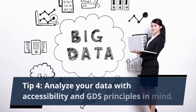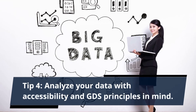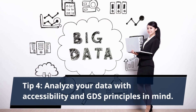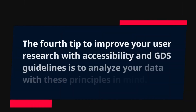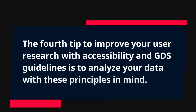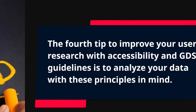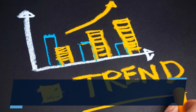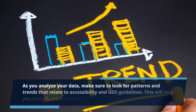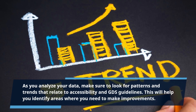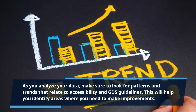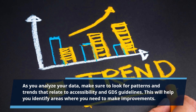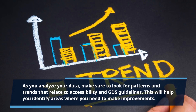Tip 4: Analyze Your Data with Accessibility and GDS Principles in Mind. The fourth tip is to analyze your data with these principles in mind. As you analyze your data, make sure to look for patterns and trends that relate to accessibility and GDS guidelines. This will help you identify areas where you need to make improvements.